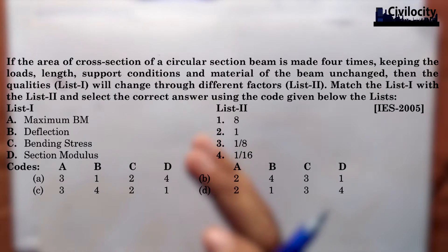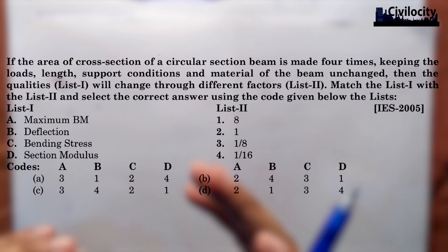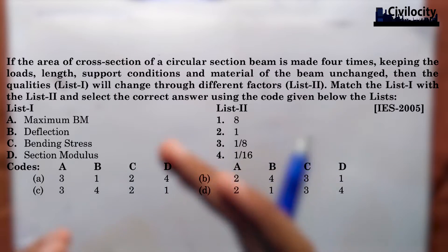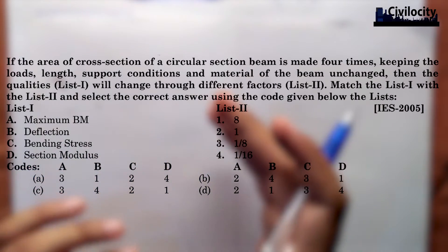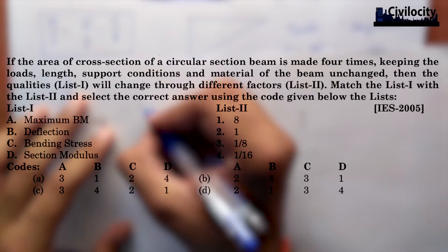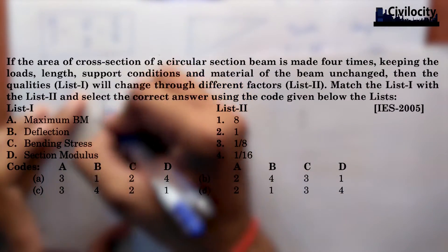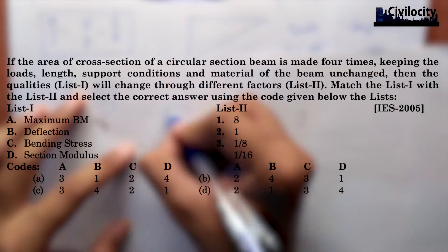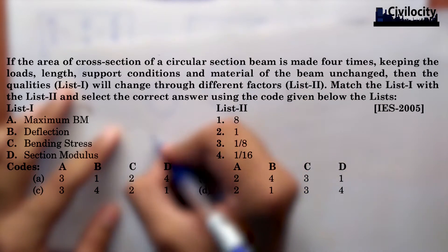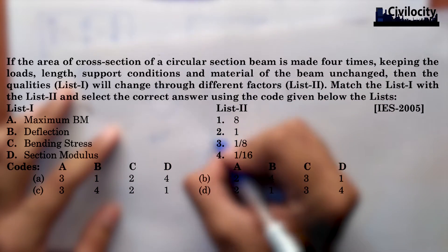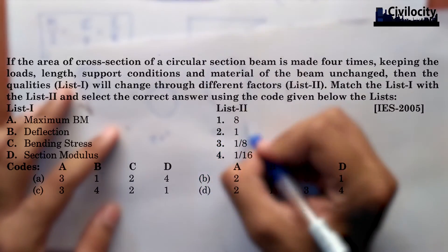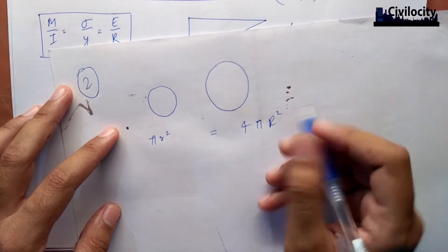So we have a question where we need to match list 1 to list 2. It has been said that the area of the circular cross-section will be made four times. The area was originally pi r squared, and now it is made 4 times, so it will be 4 pi r squared.